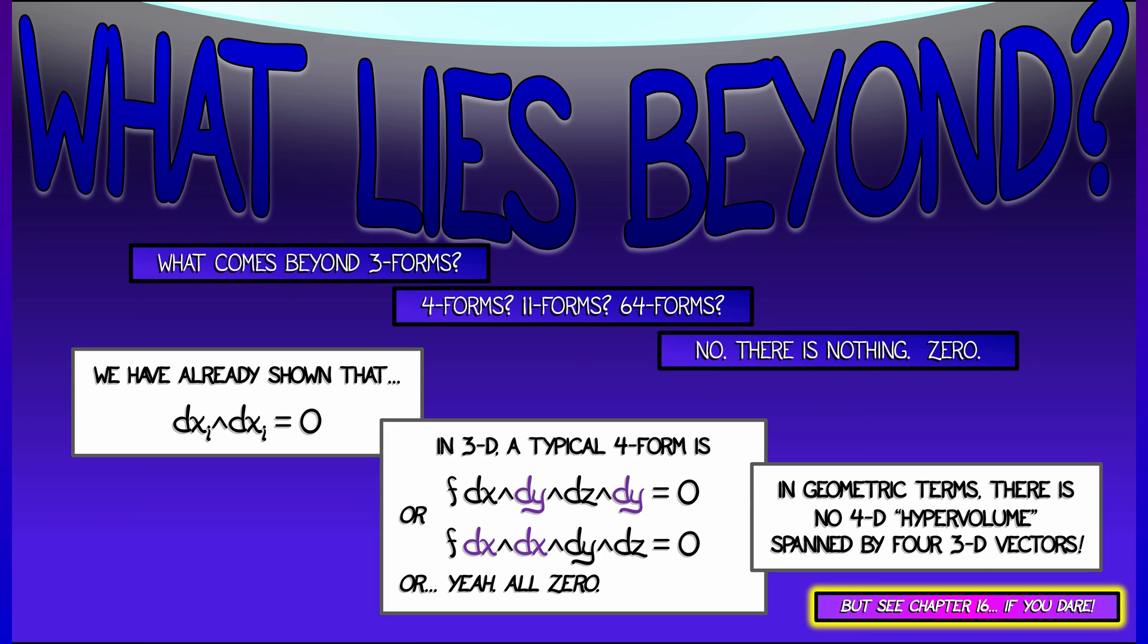Now, that doesn't mean that there are no four forms of interest somewhere in this universe. If you dare to go past some of the chapters that we're in now, you'll see something of this. But for all practical purposes, if you're working in 3D, you don't have four forms. You've got zero forms, one forms, two forms, and three forms. And that's it.